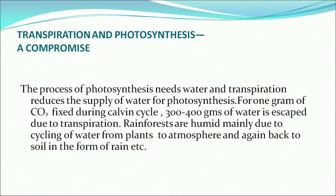Transpiration and photosynthesis are called a compromise. The process of photosynthesis needs water, but transpiration reduces the supply of water available for photosynthesis. For one gram of CO₂ fixed during the Calvin cycle, 300 to 400 grams of water is lost during transpiration. Rainforests are humid mainly due to cycling of water from plants to atmosphere and back to soil in the form of rain.